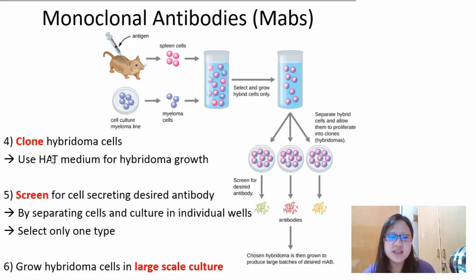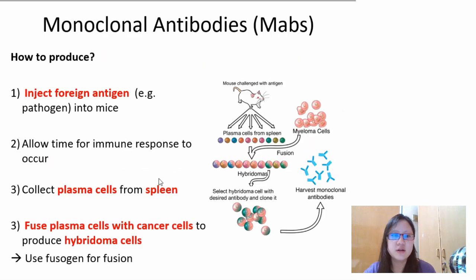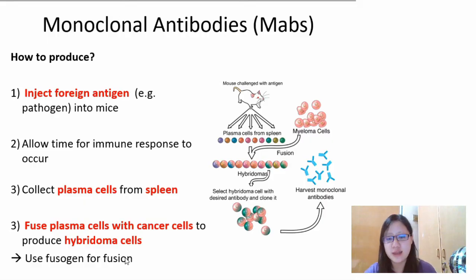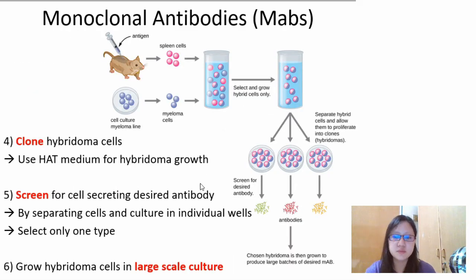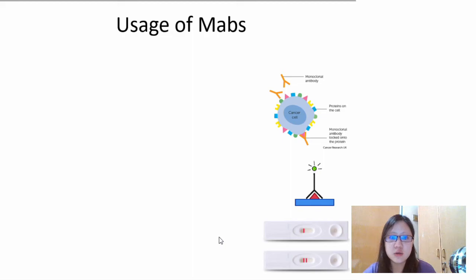You'll notice there are some words not mentioned during the procedure: HAT medium, and fusogen or fusion. These are materials needed in the process, but they are usually AVPs — other valid points — in the mark scheme. The more important things are highlighted in red, as usual. That is how you produce monoclonal antibodies.